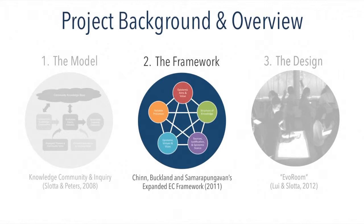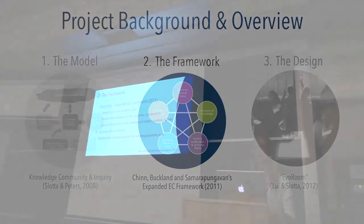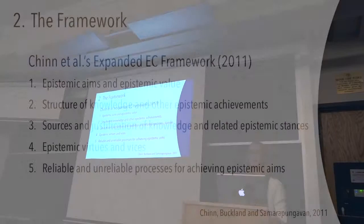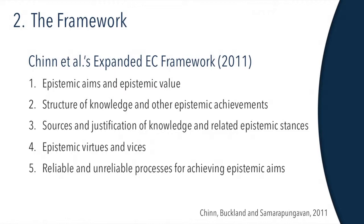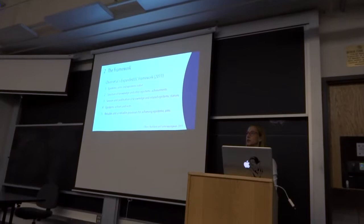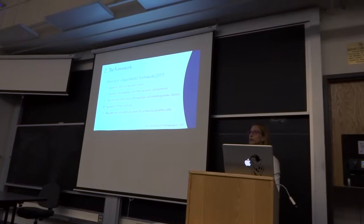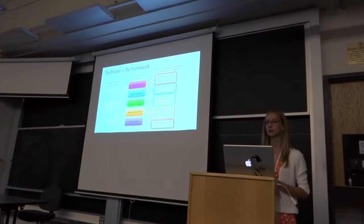The second ingredient that went into this project is a framework for epistemic cognition. Chinn and his colleagues developed an expanded framework for epistemic cognition in a 2011 paper. This included five key dimensions: epistemic aims and epistemic value, structure of knowledge and other epistemic achievements, sources of knowledge, justification and related epistemic stances, epistemic virtues and vices, as well as reliable and unreliable processes for achieving epistemic aims. In his paper, he maintains a focus on individual cognitions within these five dimensions, but suggests there's an area of opportunity for future research to explore these dimensions at the level of groups or social analysis, which is what we're doing here in the context of a knowledge community.